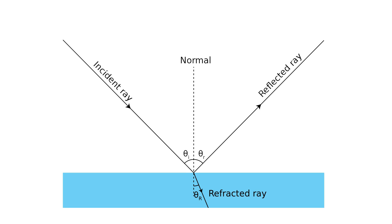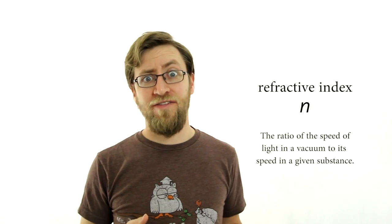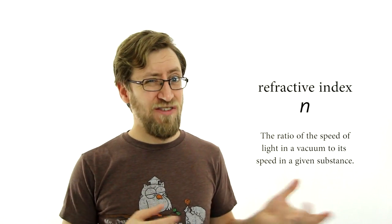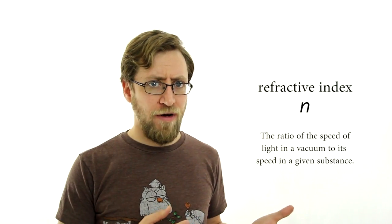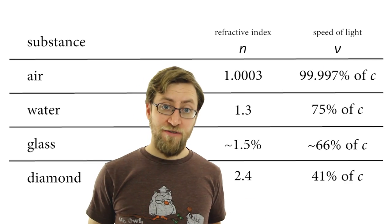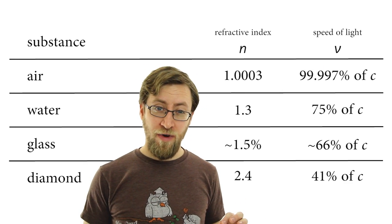When light hits a surface, the angle at which it hits is called the angle of incidence. And the reflection comes back up with the opposite angle. And the refraction goes down through the surface and gets bent. How much it gets bent is determined by the refractive index of the substance that it's going into, and also the one that it's coming from. This is described by Snell's law.